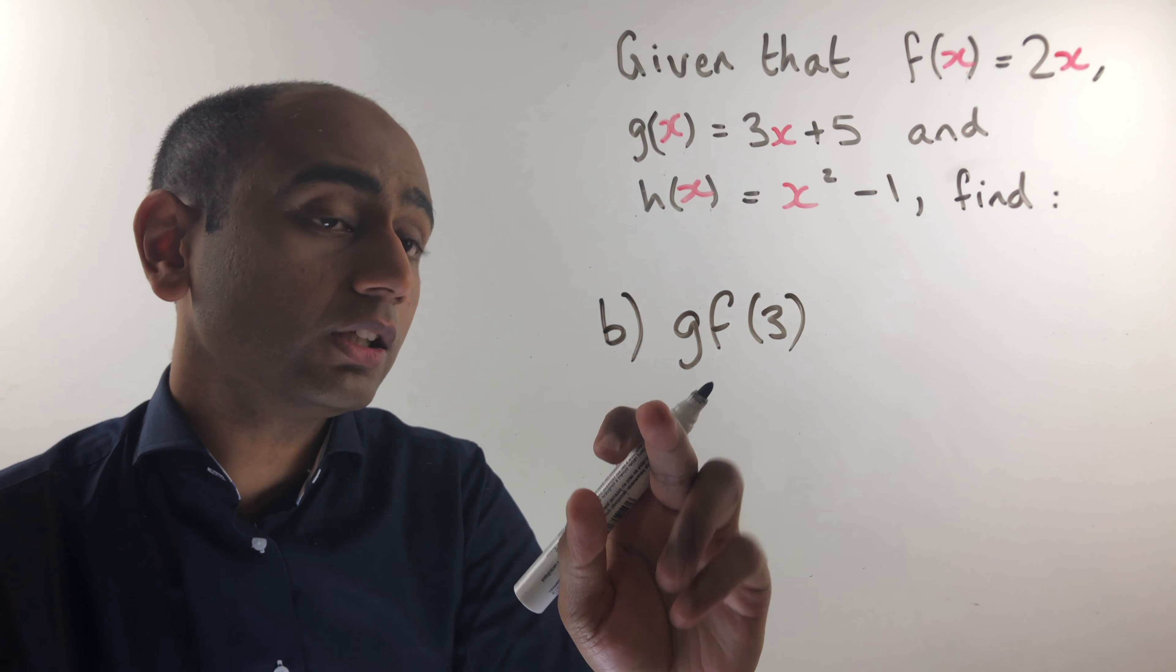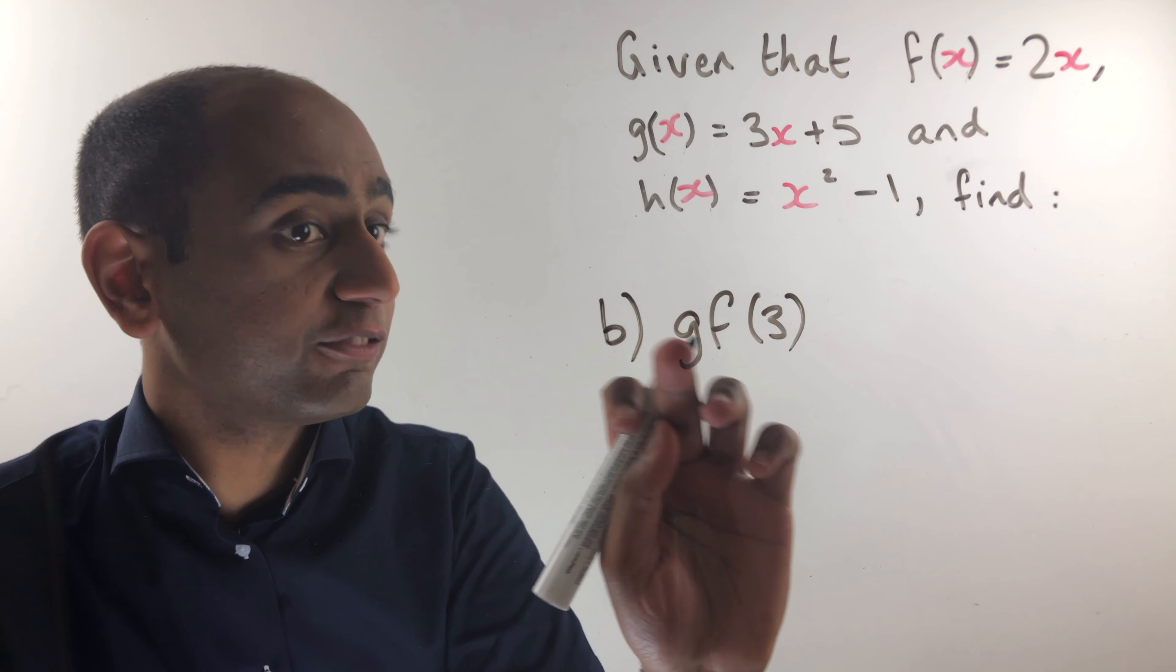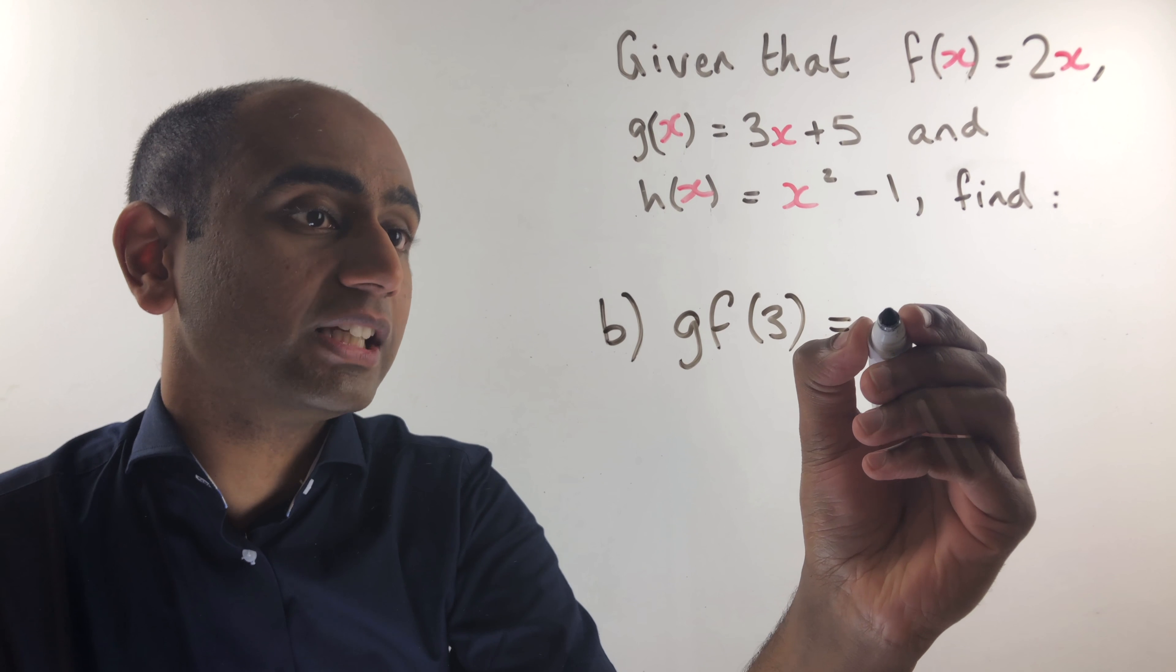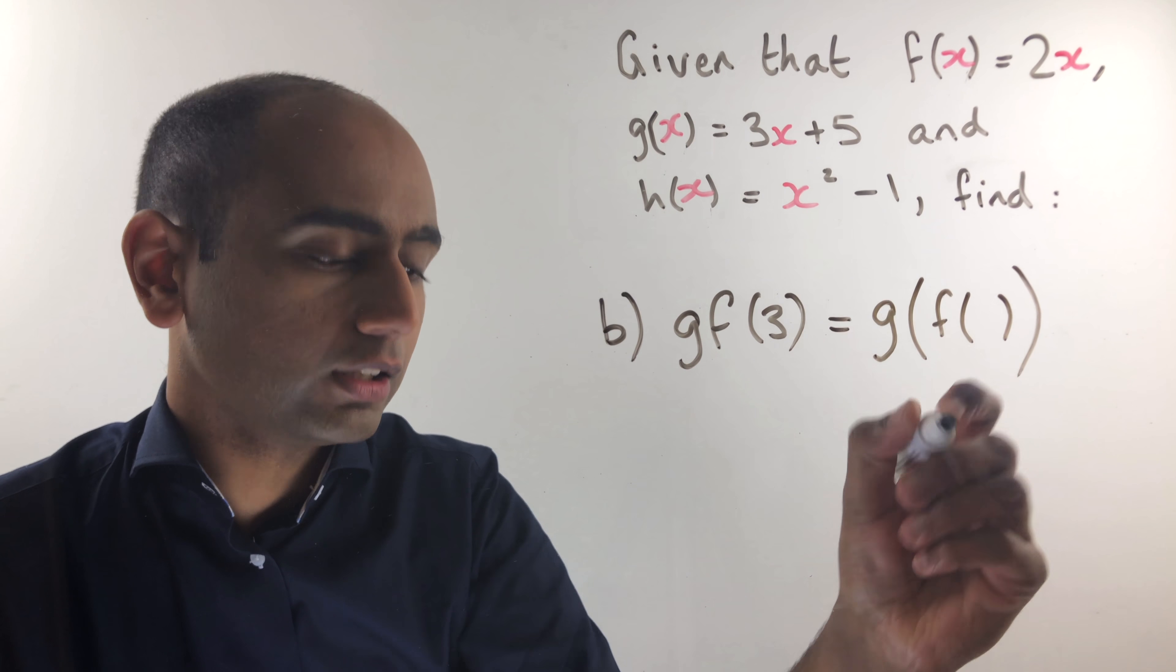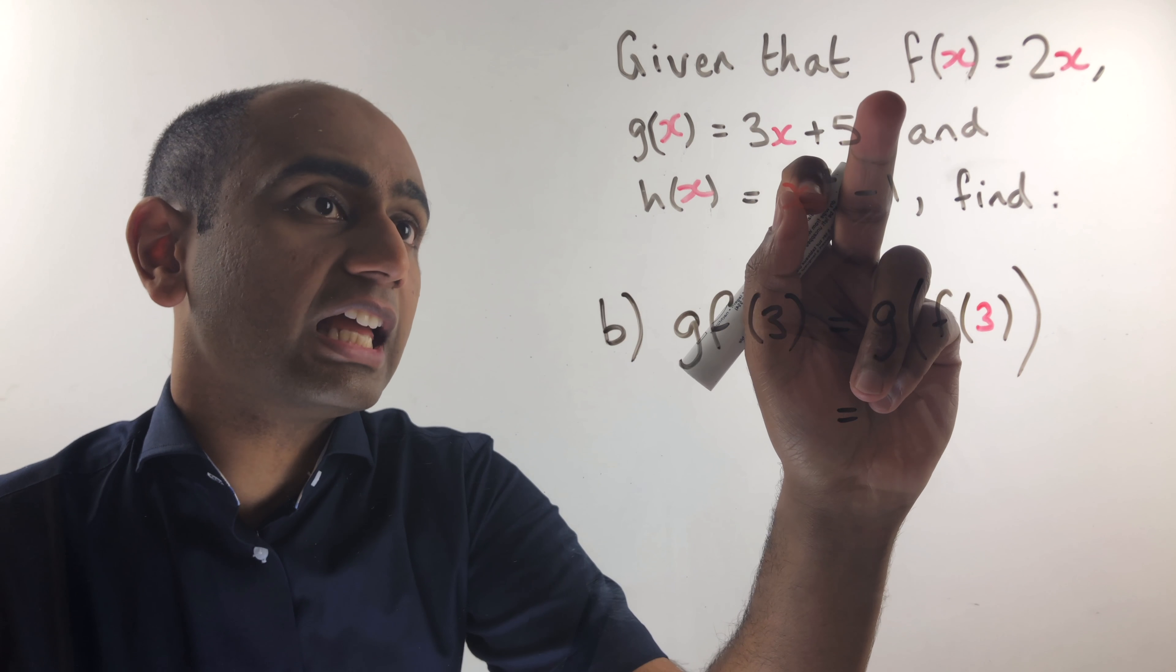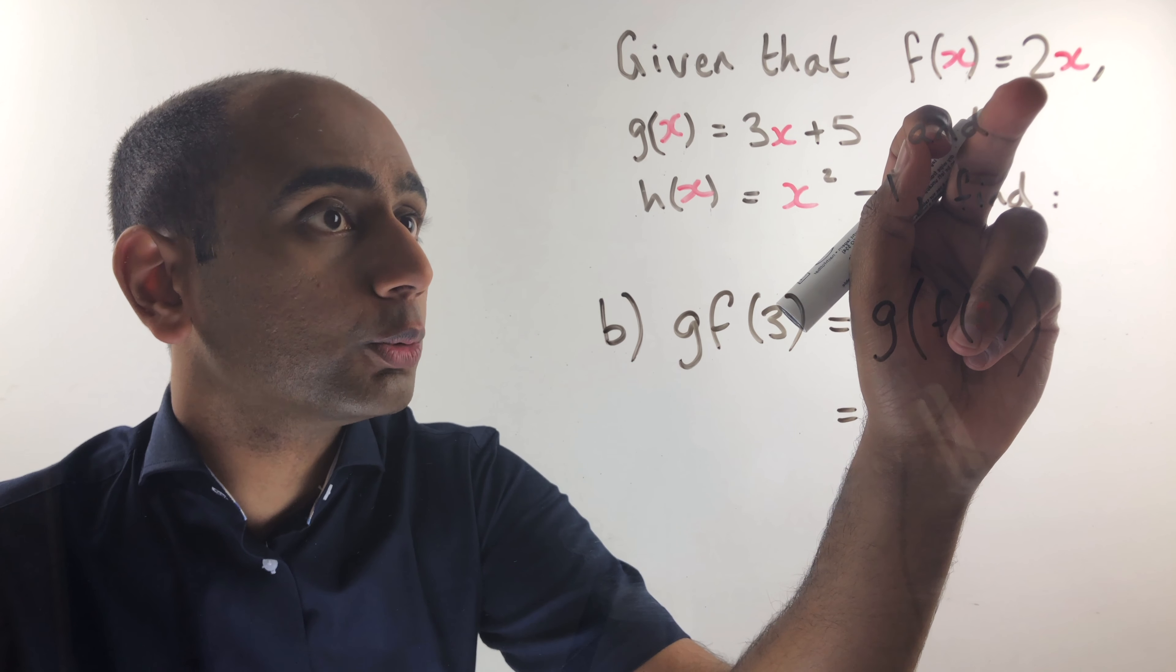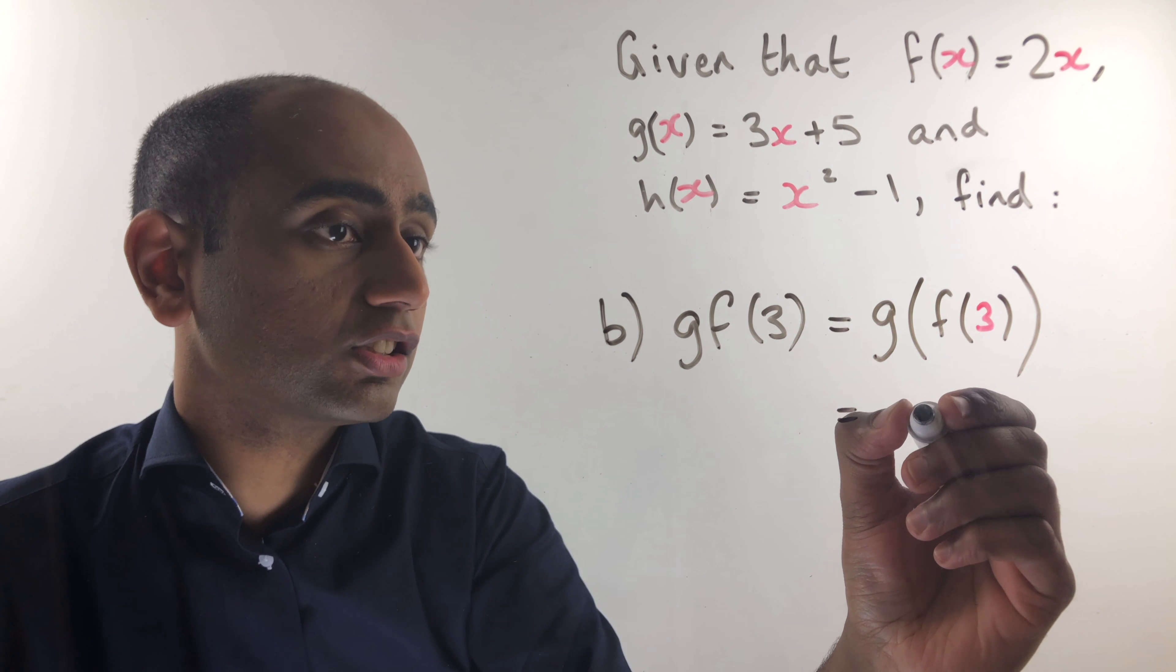In part b we're working out gf of 3 which looks very similar to what we had in part a which was fg of 3. But the order does matter as you'll see. What this means is that we're going to do g of f of 3. So let's just focus on f of 3 first of all. f of 3 would be 2 times 3. We just put an input of 3 so the output would be 2 times 3. 2 times 3 is just 6.